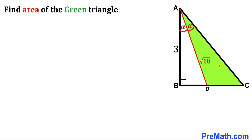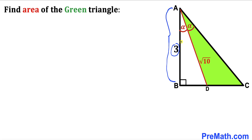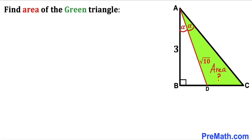Welcome to pre-math. In this video we have got a green triangle DAC fully confined in a right triangle ABC, such that angle BAD is alpha and angle DAC is also alpha — in other words both angles are congruent. Moreover, side length AB is 3 units, segment AD is square root of 10, and our task is to calculate the area of the green shaded triangle DAC.